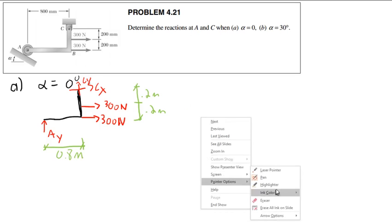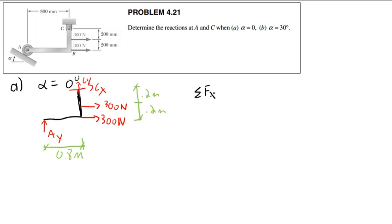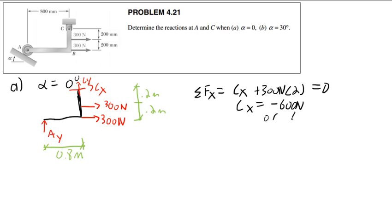The first thing I'm going to do is get the X force. Sum of forces in the X direction: CX plus 300 newtons times 2 equals 0. So CX must be equal to negative 600 newtons, or 600 newtons to the left. Now I could do a sum of forces in Y right now, but I'd rather not — that would give me both AY and CY as unknowns, and that's going to get messy.